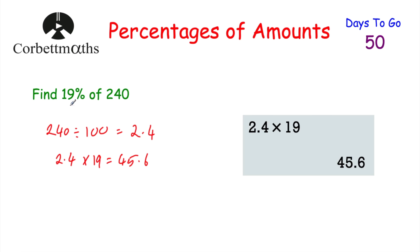So when finding a percentage on a calculator, a really useful approach is to divide by 100 to get 1%, and then multiply by whatever percentage you want. That helps you find percentages quickly and easily on a calculator.